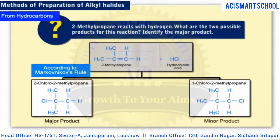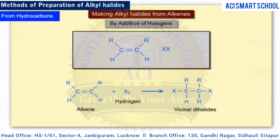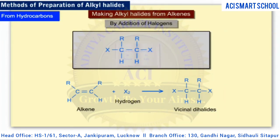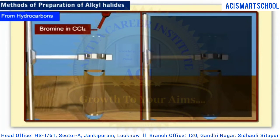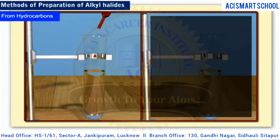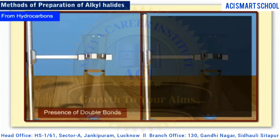If alkenes are reacted with halogens, vicinal dihalides are produced. Usually these reactions use either chlorine or bromine. The general equation is shown here. Halogen atoms attach to the carbon atoms in the double bond, so the halogen atoms bond to adjacent carbons. The addition reaction of bromine in CCl4 to an alkene forms the basis for an experimental procedure to detect double bonds: if the reddish-brown color of bromine disappears, this is good evidence for the presence of double bonds. No change in color would indicate the absence of double bonds.